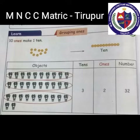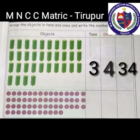And there are 2 ones. Therefore, 3 tens and 2 ones, so the number is 32. Group the objects in tens and ones and write the number.